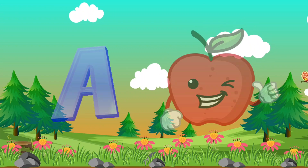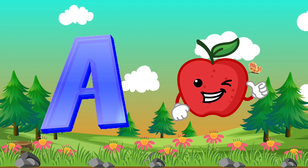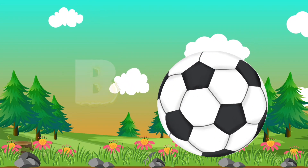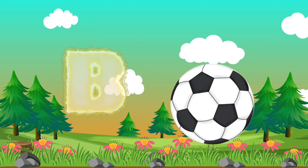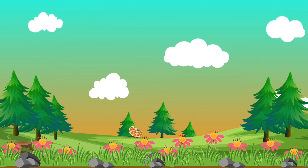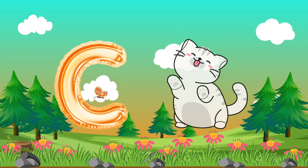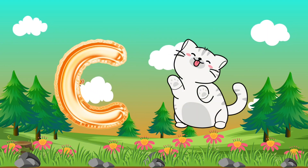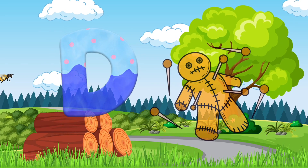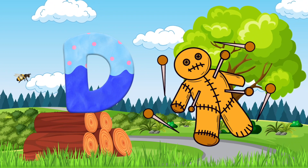A is for apple, a-a-apple. B is for ball, b-b-ball. C is for cat, c-c-cat. D is for doll, d-d-doll.